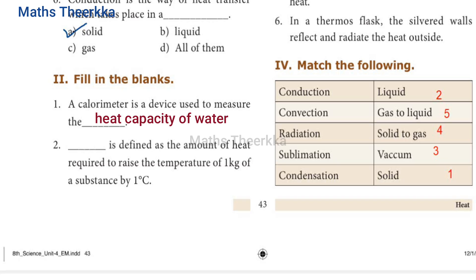Second. Specific heat capacity is defined as the amount of heat required to raise the temperature of 1 kg of a substance by 1 degree Celsius.